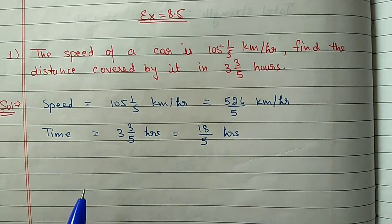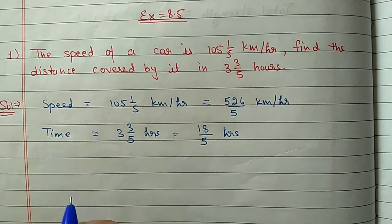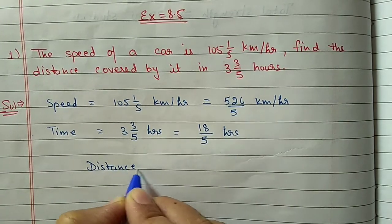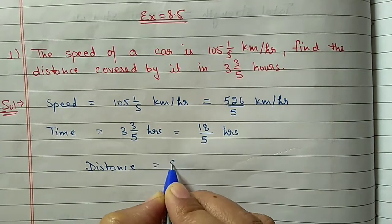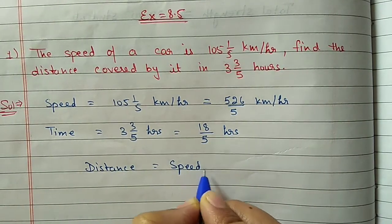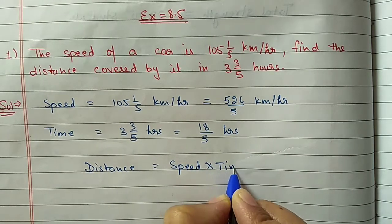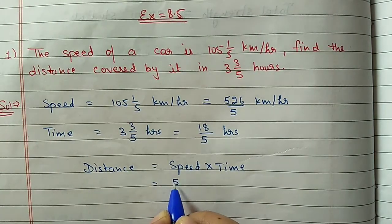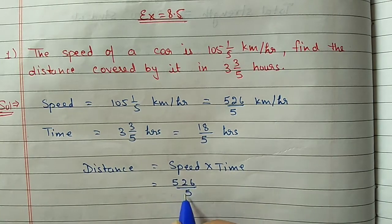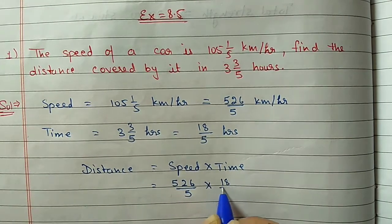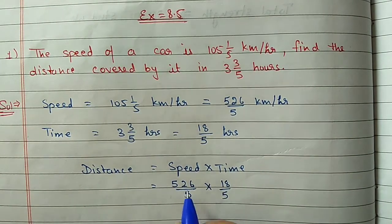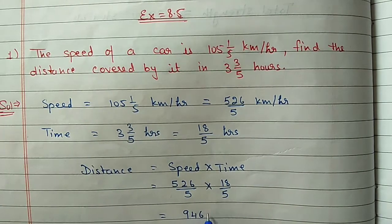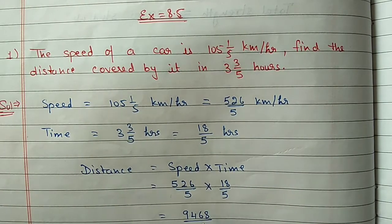Now we have to find out the distance. Distance is equal to speed into time. Substituting the values: speed is 526 by 5 and time is 18 by 5. Multiplying these two numbers gives 9468 by 25.